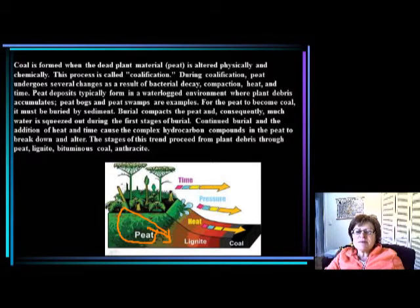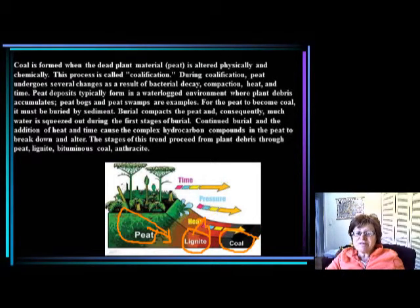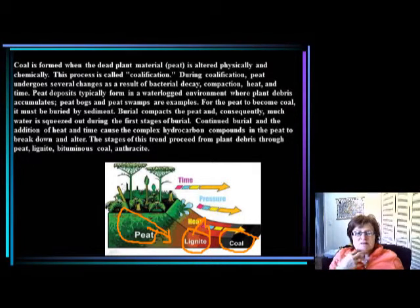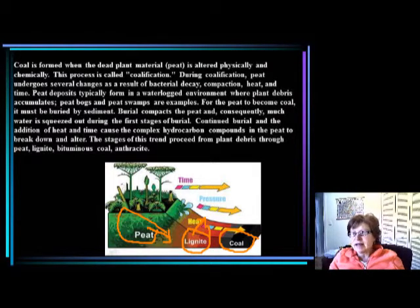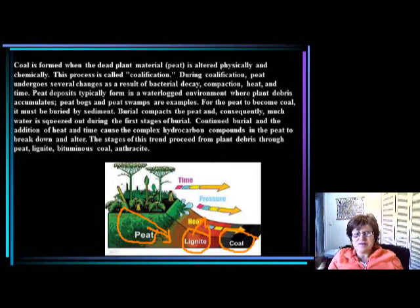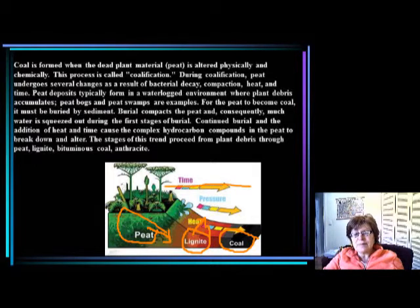The next step is lignite, which has 75% carbon and 25% ash. Then you have bituminous coal at 85% carbon and 15% ash when burned. If the coal metamorphoses further, we call it anthracite, and anthracite is 95% carbon with only 5% ash. All you need to produce these progressively better coals is time and burial — it has to get buried deeper and a lot of time must pass.